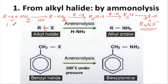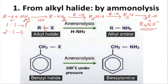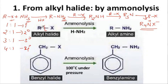When you take a 1:1 ratio of alkyl halide to ammonia, you get primary amines. If you take a 2:1 ratio, you get secondary amines. Take a 3:1 ratio, you get tertiary amines. Take a 4:1 ratio, you get quaternary ammonium salt. Not only aliphatic amines — you can also prepare aromatic amines.